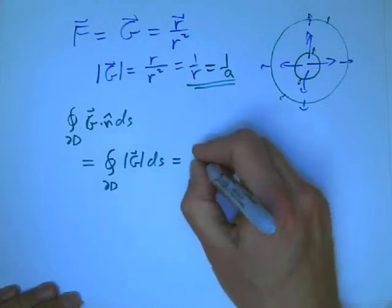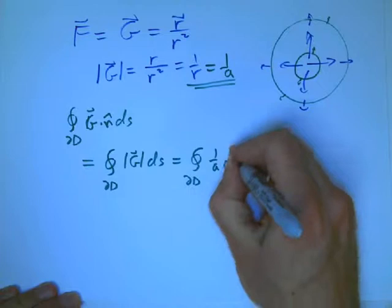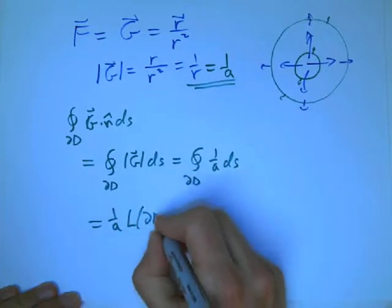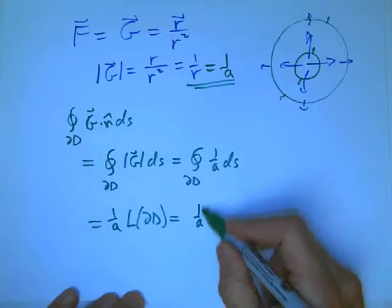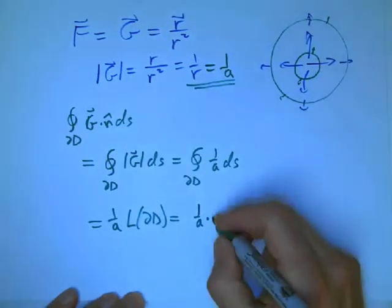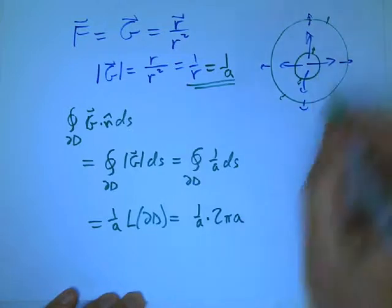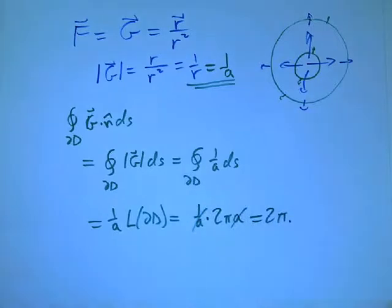That becomes the magnitude of g. That becomes that constant 1 over a. So the 1 over a comes out, and you just get the length of the boundary circle. 1 over a, that's coming from the fact that the arrows are getting smaller as you go out, times 2πa. That's coming from the fact that the circle's getting bigger as you go out, and those cancel. And we always get the same number 2π.